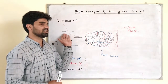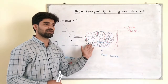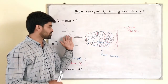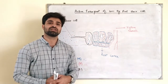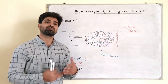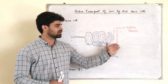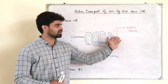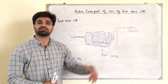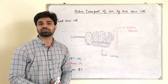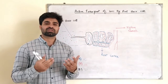In some cases, minerals are present in high concentration in the soil compared to the inside of the root. In this case, they move passively inside the root hair cells, pass through the root cortex into the xylem vessels, and are transported to other parts of the plant.